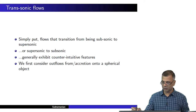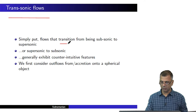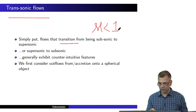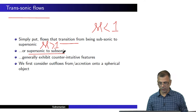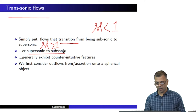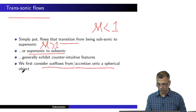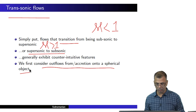We will continue with our discussion of transonic flows — flows that transition from being subsonic, Mach number less than 1, to supersonic, Mach number greater than 1, or supersonic to subsonic, either way. We will do this in some more detail: inflows and outflows, accretion onto a spherical object.